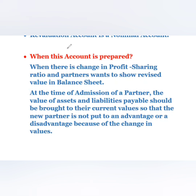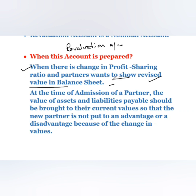When is the revaluation account prepared? First, at the time of change in profit sharing ratio — when there is a change in profit sharing ratio and partners want to show revised values in the balance sheet. Partners will have two situations: they want to show revised values in the balance sheet, or they do not. If they do not want to show revised values, they pass a single adjustment entry and adjust values through their capital accounts. If they do want to show revised values, they prepare a revaluation account and share profits and losses among all partners in the old ratio.